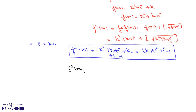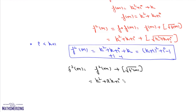Now we find f³(m) = f(f²(m)) = f²(m) + floor(√(f²(m))). Since f²(m) = (k+1)² + (i−1): if i = 1, then f²(m) = (k+1)², which is a perfect square and satisfies our condition. If i > 1, then f²(m) > (k+1)², so floor(√(f²(m))) = k+1, giving f³(m) = k² + 3k + i + 1.